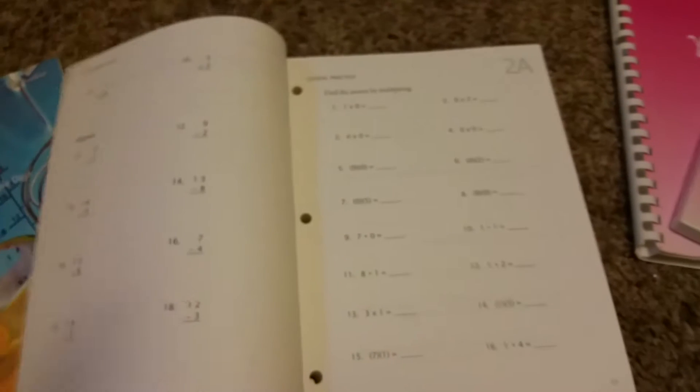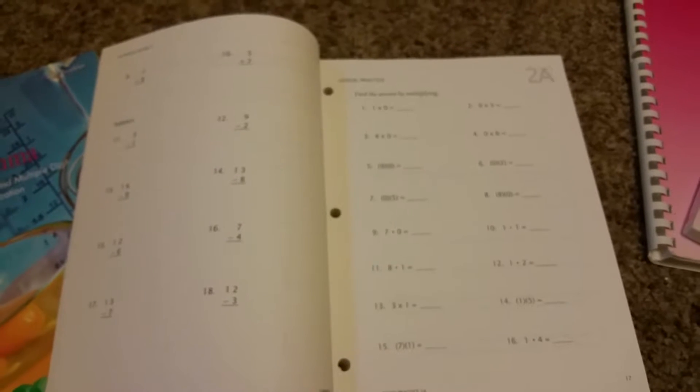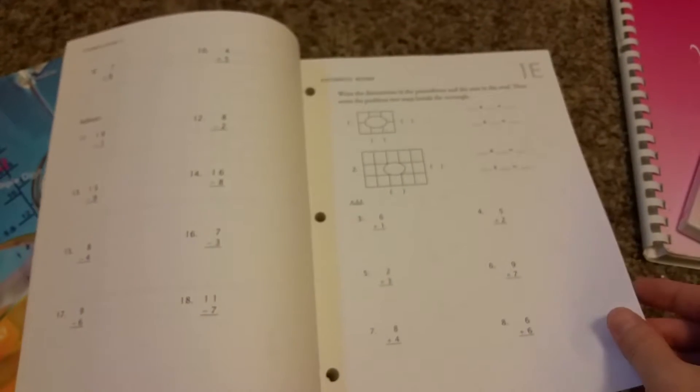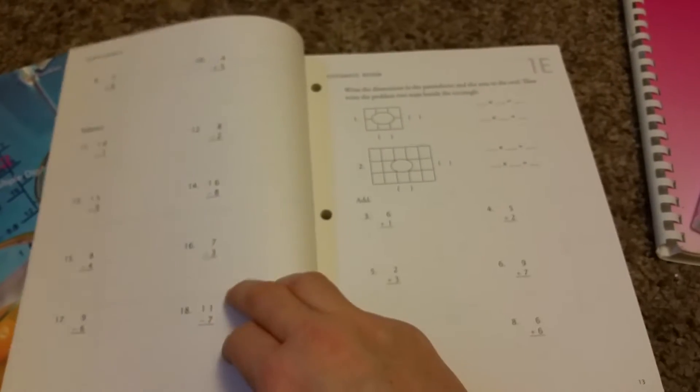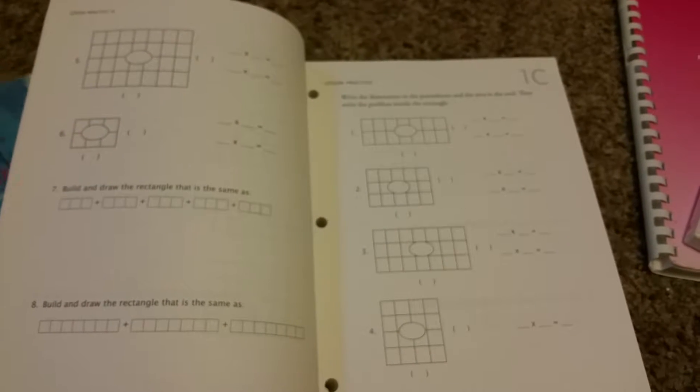You don't have to do all the pages. If your child is really understanding and flying through it, you don't have to do A, B, and C the first day or D, E, and F for review. You can just do one or two worksheets and move along. It just depends on your child. The test is simple and it's just to see where they are at.